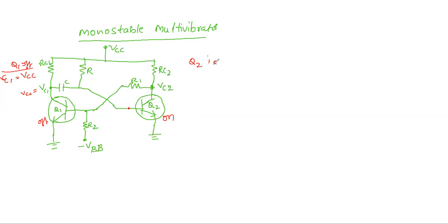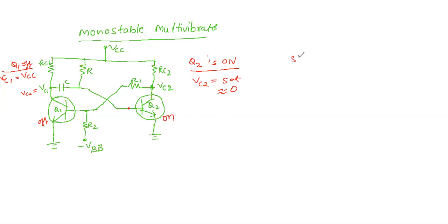When Q2 transistor is ON, the collector output voltage will be saturation voltage, as we discussed in the basic concept. Now Q1 is OFF and Q2 is ON. The capacitor is fully charged to VCC which is applied to the base of Q2, keeping it ON. The collector voltage of Q2, which is 0, is coupled to the base of Q1 keeping it in OFF condition. This is called the stable state — Q1 is OFF and Q2 is ON.